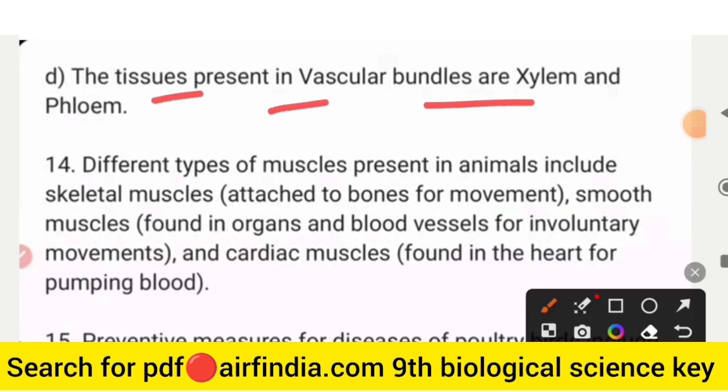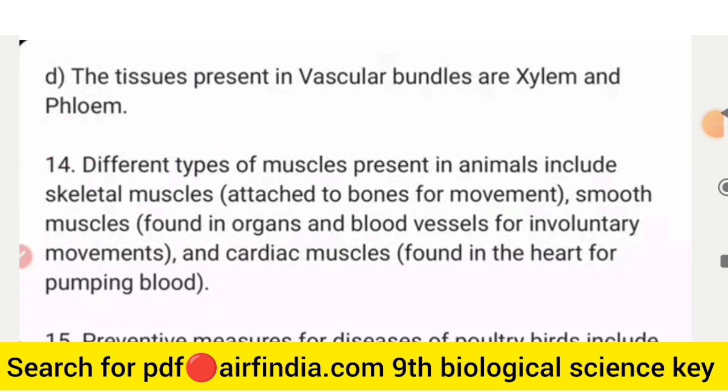The D point: the tissues present in vascular bundles are xylem and phloem.